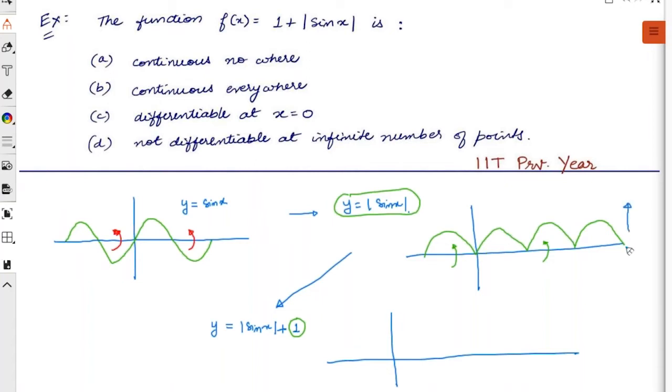If this is the x-axis, the entire graph will shift up. This is y is equal to one. So nothing complicated—this graph will now jump up like this. So this is the graph of y is equal to mod sine x plus one. That's it, as simple as that.